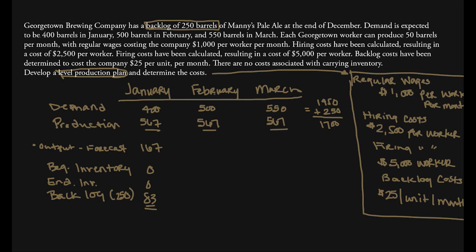In February, 567 units of output minus demand of 500 gives us 67 units. Beginning inventory is still zero. That 67 units minus the remaining 83 backlog units gives us a further reduction, but we're still 16 barrels short of clearing all demand and the December backlog.